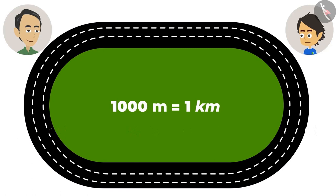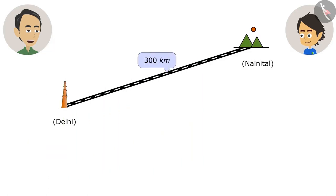Our school sports competition had a 1,000 meters race, so the people who participated in it ran one kilometer. Yes! Then one kilometer is a lot, because the people running in it were very tired. And Nainital is 300 kilometers away.